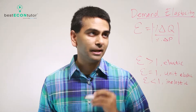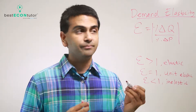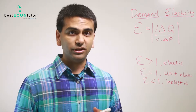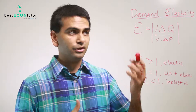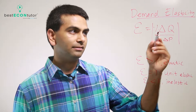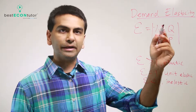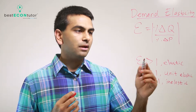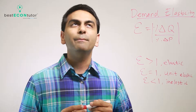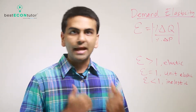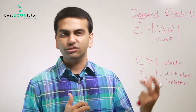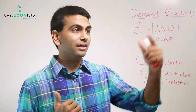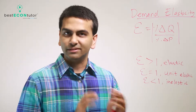The formula for elasticity is the percent change in quantity divided by the percent change in price. In that example, if the price changed by 10% and you bought 20% less, that'd be 20 over 10. Since the numerator is bigger than the denominator, that number is bigger than 1 — that's when you're elastic. If you react stronger than the price change, the elasticity will be bigger than 1, and you're elastic.